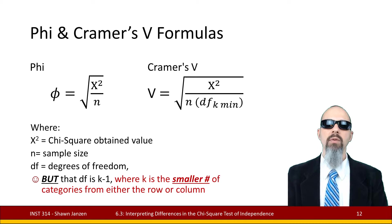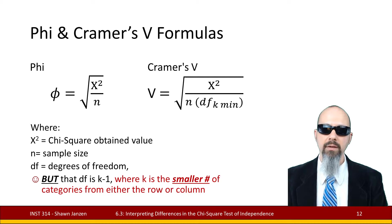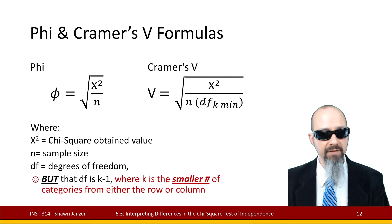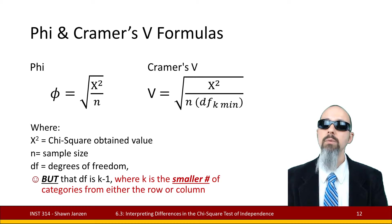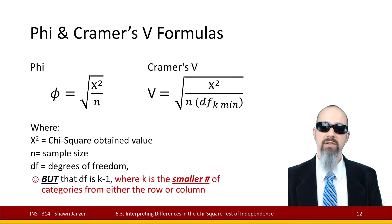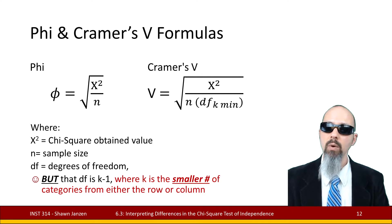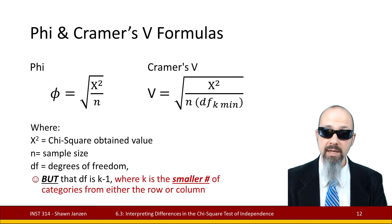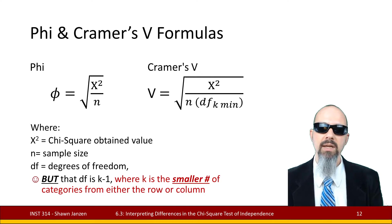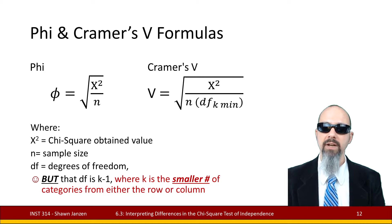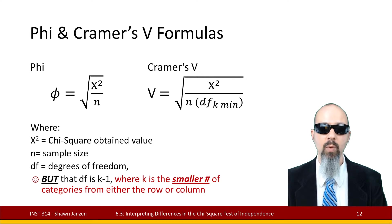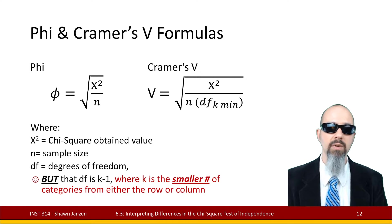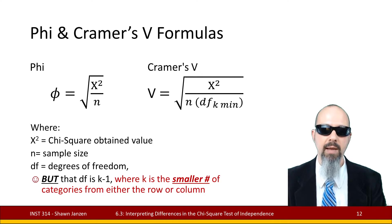The formula for phi takes the chi-square obtained value, divides it by the sample size N, and then takes the square root. Cramer's V is very similar but includes a degrees-of-freedom component to control for the size of the table: take the chi-square obtained value, divide it by N times df_Kmin (degrees of freedom with K-1 minimum, where K-1 uses the smaller number of rows or categories), then take the square root to give us V.